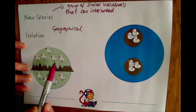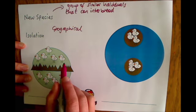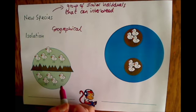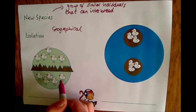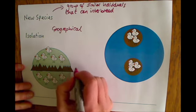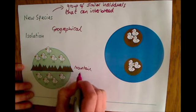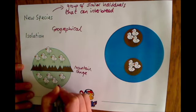Because these were isolated, they can become two different species since they no longer interbreed with each other. Therefore, their genes and their genetic information changes so much that they are now considered to be two different species. This mountain range here is an example of something that causes isolation between two groups.